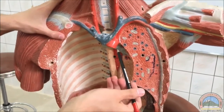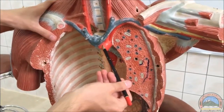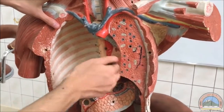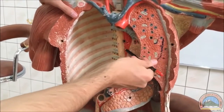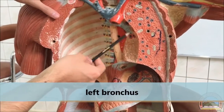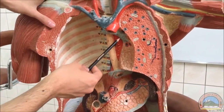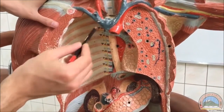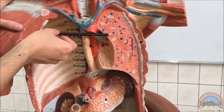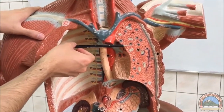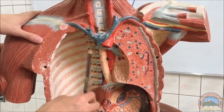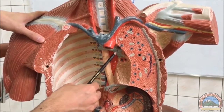This is the superior vena cava and this is the aorta. The aorta will arch this way — see, it arches around the heart. This is the aorta and this is the left bronchus, one of the bifurcations of the trachea. At the level of the sternal angle, the trachea will divide into two branches — the right and left bronchi.